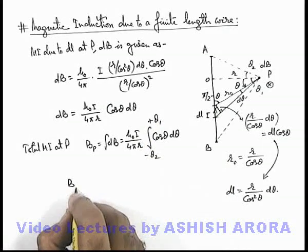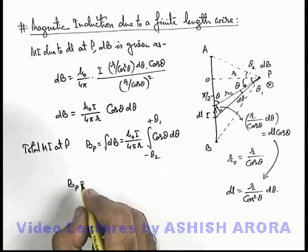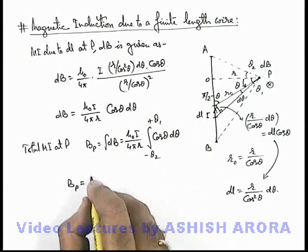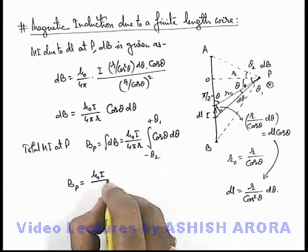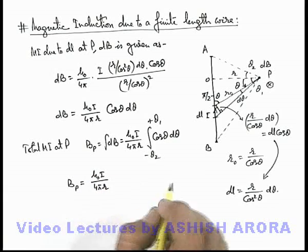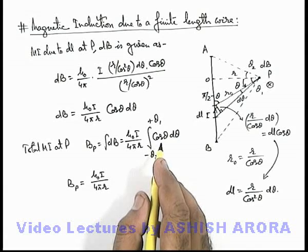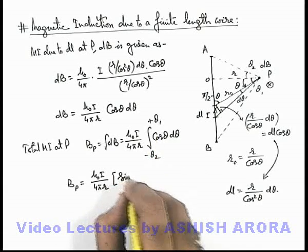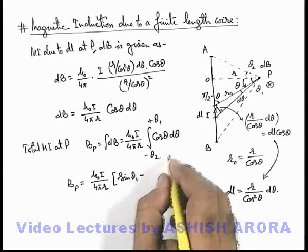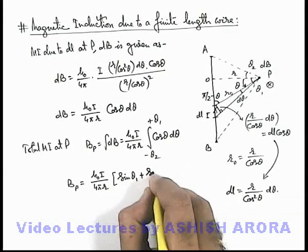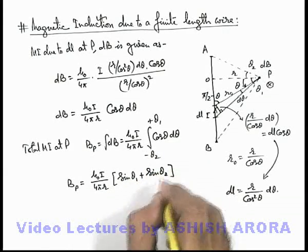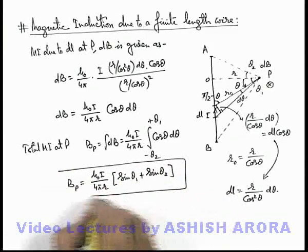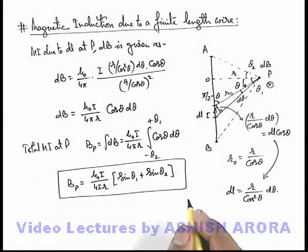On integrating, we are getting the value of magnetic induction at point P as μ₀i by 4πr. Integration of cos theta will be sine theta. If we substitute the limits, this will be sine theta 1 minus sine of minus theta 2, which is plus sine theta 2. So this is the magnetic induction at point P due to a finite length wire.